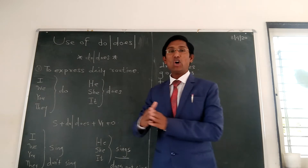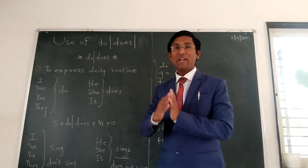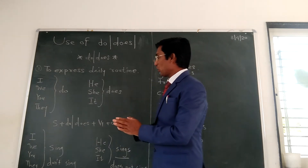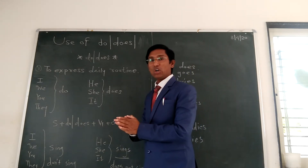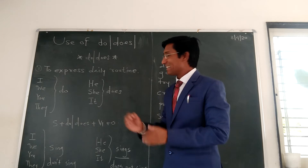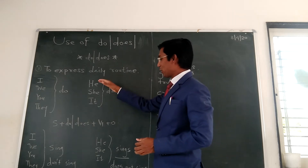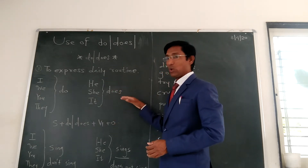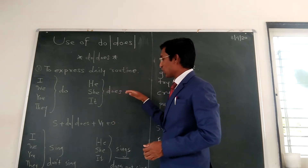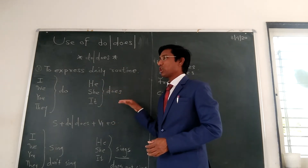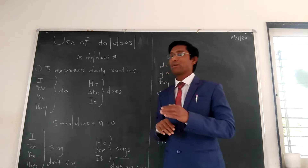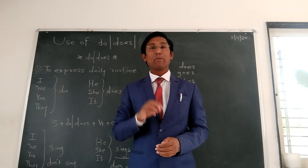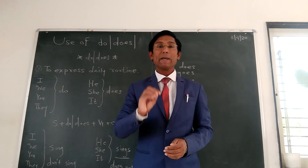I do not go, we do not go, you do not go, they do not go, he does not go, she does not go, it does not go. When we use 'does', there is no need to add -s or -es to the verb — the verb stays in V1 form.